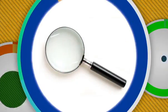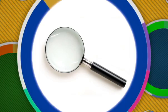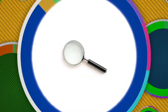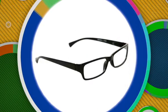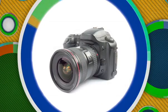Scientists use the principles of light bending for all kinds of things that make our life easier in the real world — things like magnifying glasses, reading glasses, and even cameras.